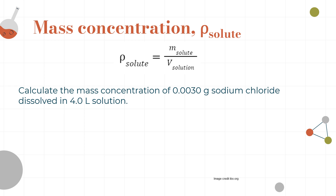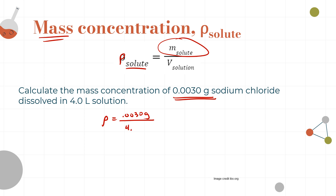We most often talk about molar concentration, but sometimes we use mass concentration. Instead of moles we have mass of solute divided by volume of solution, and instead of c we use the Greek letter rho. This one is easy — no moles needed. For our earlier example: 0.0030 g ÷ 4 dm³ = 7.5 × 10⁻⁴ g dm⁻³. Easy.